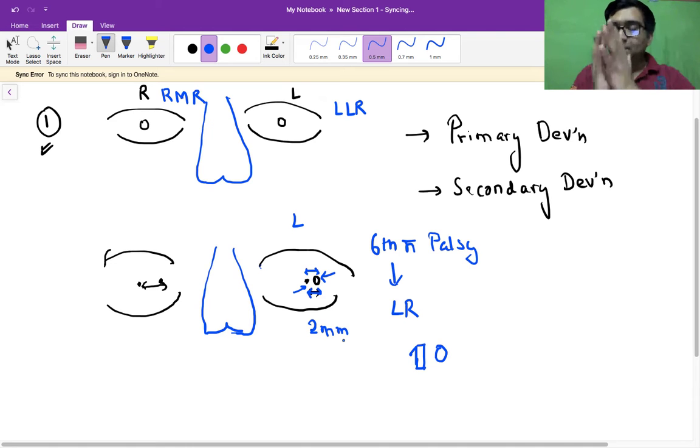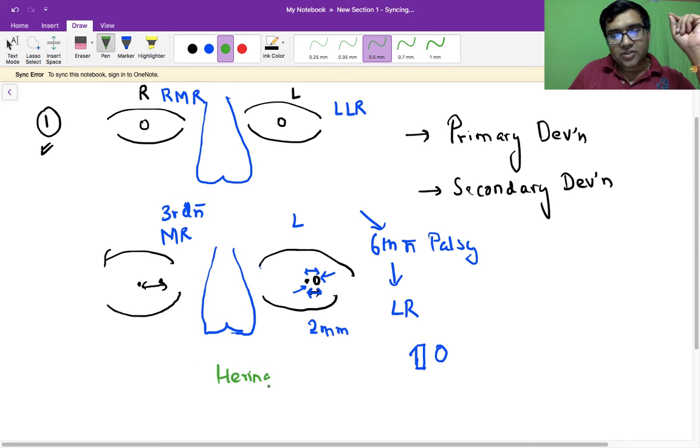innervation was by the sixth nerve, but because sixth nerve is having palsy, the amount of innervation that is there on the sixth nerve, the same innervation would go to the medial rectus muscle by the third nerve. Why? Because here comes one important law that we have studied, that the Hering's law of